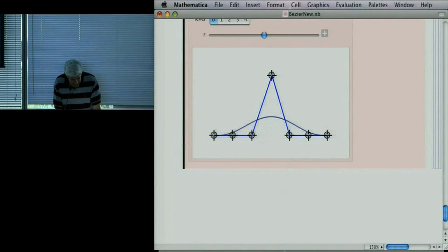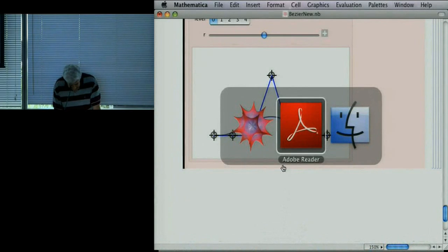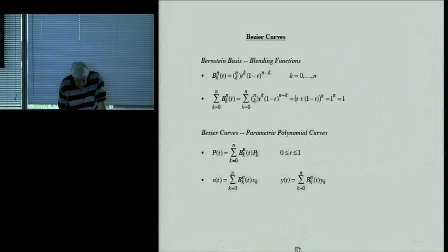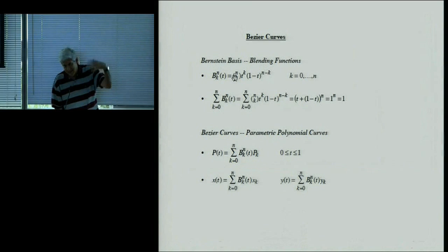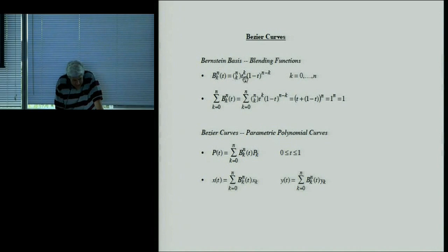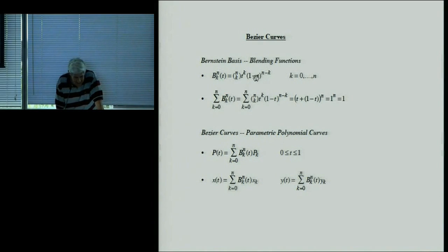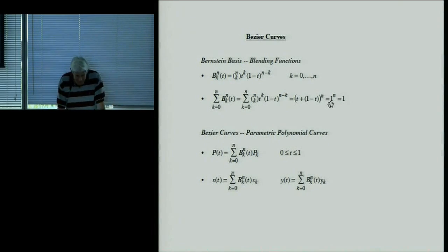Bézier curves are actually polynomials. The formulas use Bernstein basis functions, written down for degree N. Instead of writing a polynomial in terms of 1, T, T², T³, we use a different basis. You've probably seen the Bernstein basis functions in probability theory — but we use them in approximation theory. One key property: they sum to one. If you add them up and expand by the binomial theorem, the result sums to one.